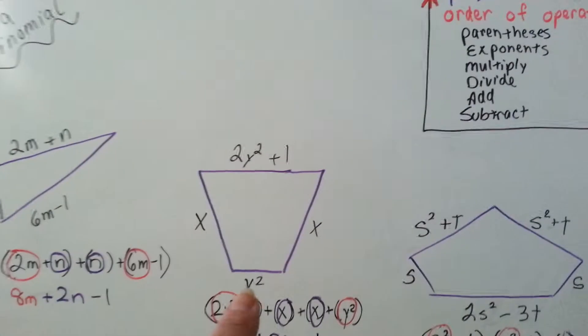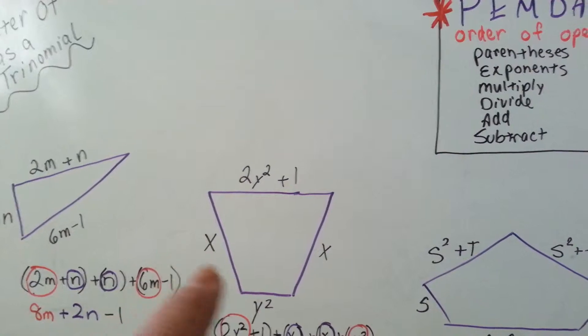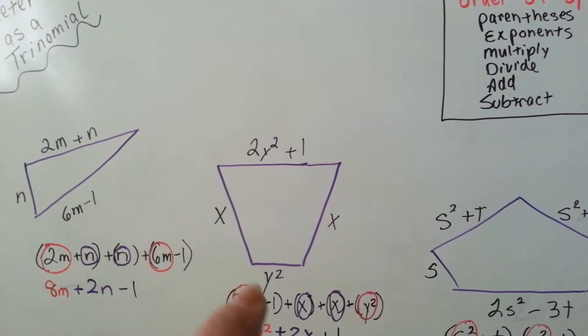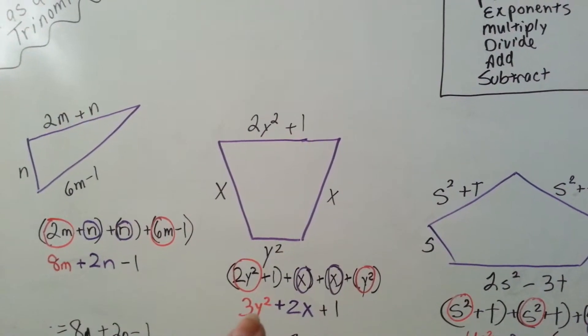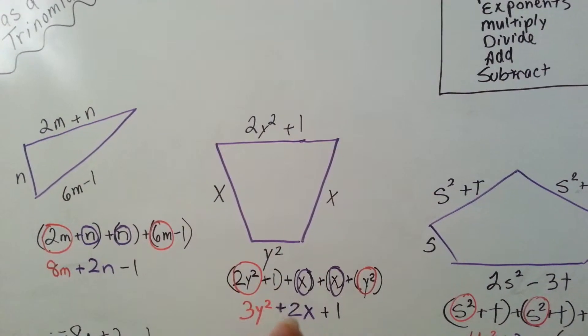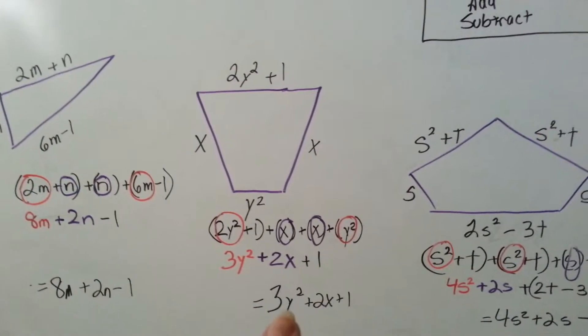Look at this one. We've got 2y squared plus 1, an x, another x, and a y squared. We're going to combine the 2y squared with the y squared and get 3y squared. We're going to combine this x with this x to get 2x, and then we have the plus 1 all by itself.